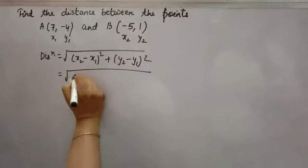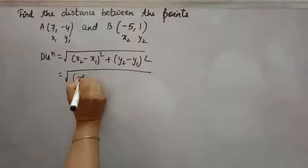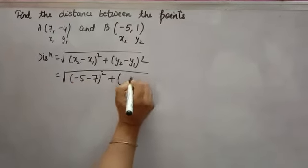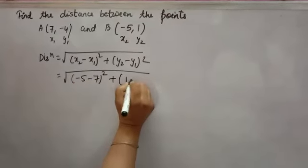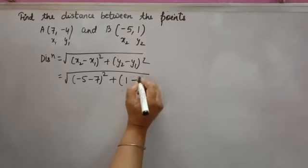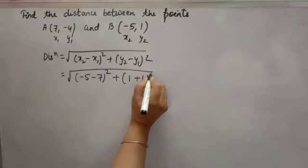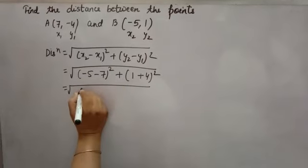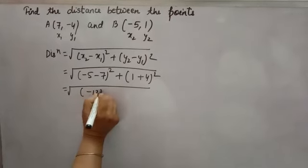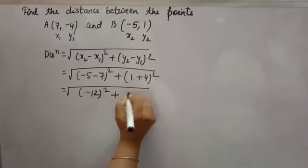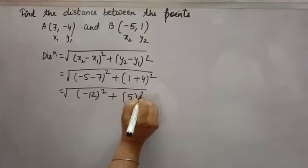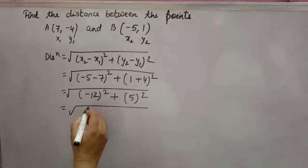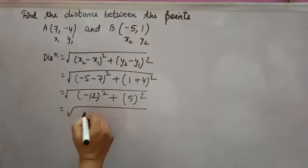Substituting the values: x2 minus x1 is (-5 minus 7), whole square, plus y2 minus y1 is (1 minus of minus 4), which becomes plus 4, whole square. Both terms are negative, so we add them: minus 12 whole square, plus (1 plus 4) gives 5 whole square.